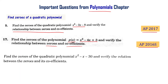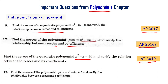Find the zeros of the quadratic polynomial x squared minus x minus 30 and verify the relationship between zeros and its coefficients — from the AP final exam 2019. Also, find the zeros of the polynomial p of x equal to x squared minus 4x plus 3 and verify the relationship between zeros and coefficients — from the AP final exam 2016.